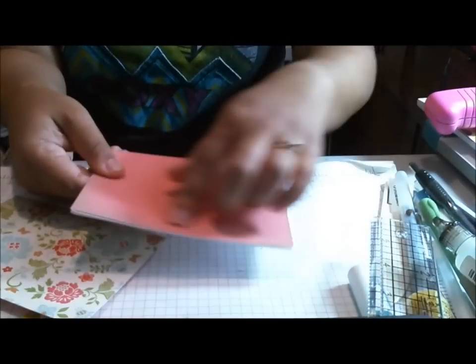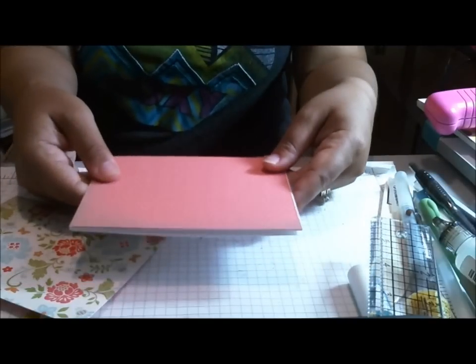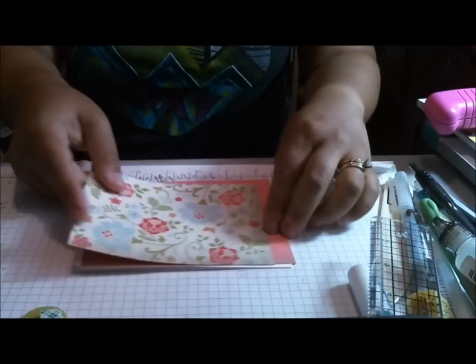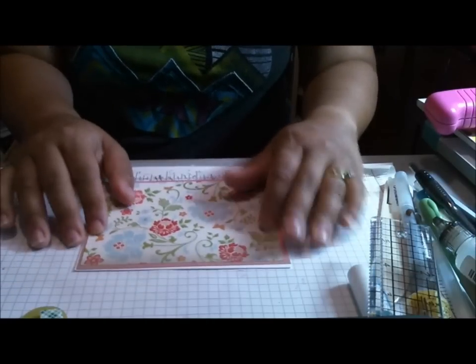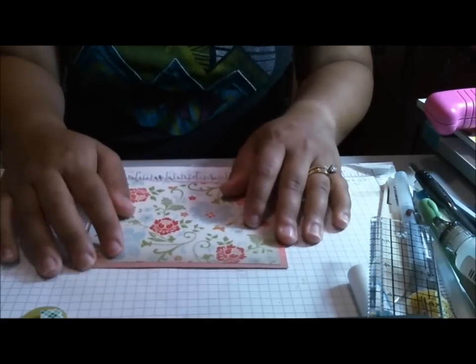It's got sort of this distressed around the edges so I thought it kind of looks fall-like. So it's 5 1/2 x 4 1/4 for this piece right here and then this is 5 1/4 x 4.